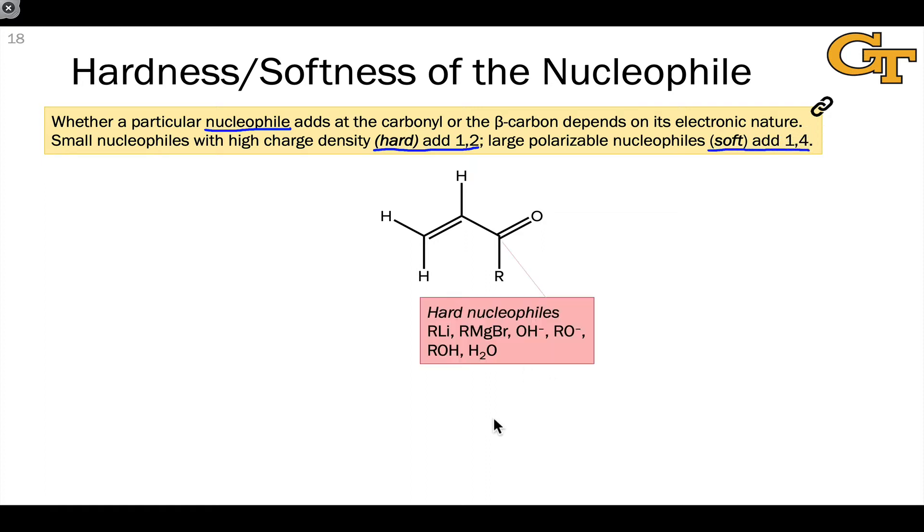Hard nucleophiles are things like strongly polarized organometallic reagents, almost ionic organometallics like organolithiums and Grignard reagents. Small, highly charged anions like hydroxides and alkoxides, and so on and so forth. And for the organometallics, we can think of these almost as carbanions. There's very concentrated negative charge on a carbon atom in these hard nucleophiles.